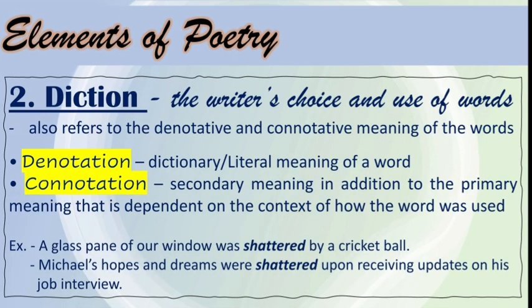The second element of poetry is diction — it is the writer's choice and use of words. It also involves the denotative and connotative meaning of words. Denotation is the dictionary or literal meaning of a word, while connotation is a secondary meaning in addition to the primary meaning, dependent on the context of how the word was used. Example: 'A glass pane of our window was shattered by a cricket ball' — here, 'shattered' is used literally, so it is an example of denotation. In contrast: 'Michael's hopes and dreams were shattered upon receiving updates on his job interview' — here, 'shattered' is used in an abstract or secondary meaning, making it a connotation.